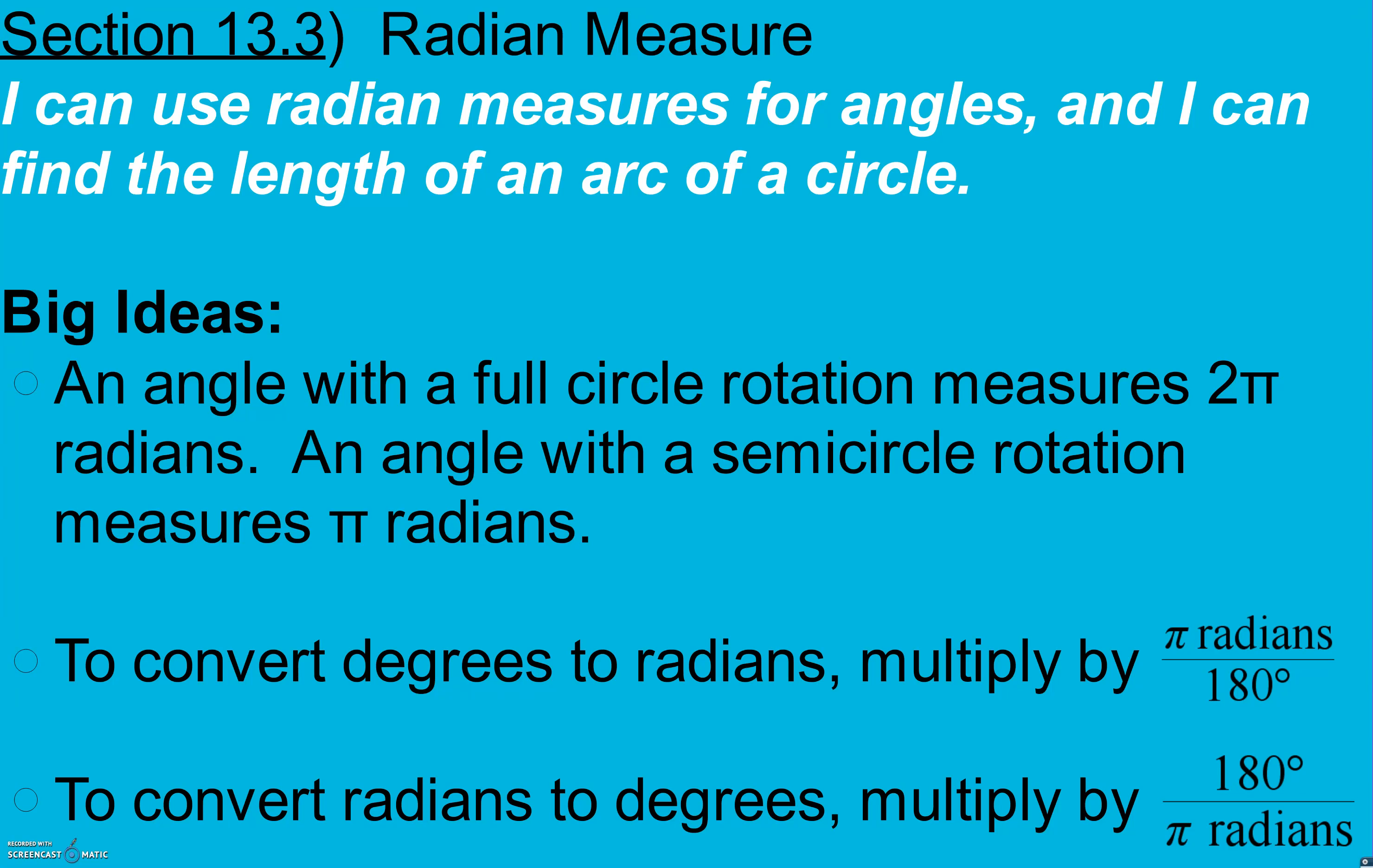Big ideas: An angle with a full circle rotation measures 2π radians, just like it's 360 degrees. An angle with a semicircle rotation measures π radians. So this half circle is π radians. The second half is π, which means our full circle is 2π.